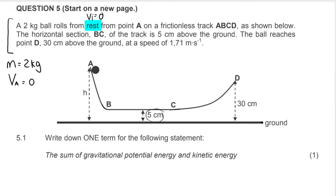The horizontal section B-C of the track is five centimeters above the ground, so B and C are on the same horizontal level. That height is my zero reference position. The ball reaches point D at 30 centimeters above the ground, and they give me the speed at point D: 1.71 meters per second along the track.